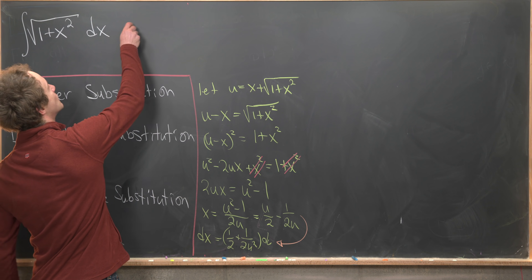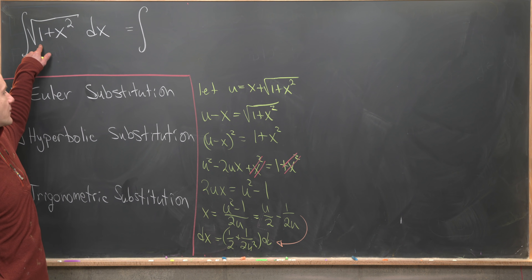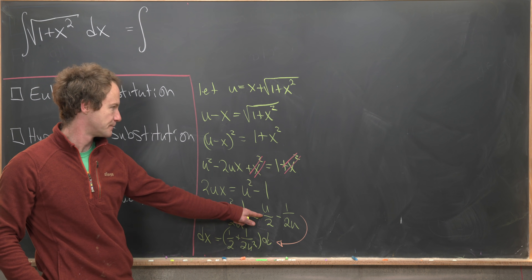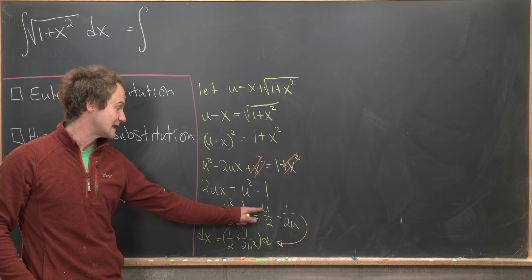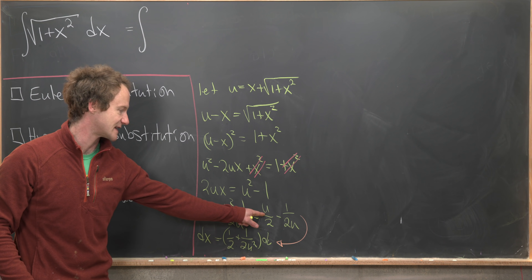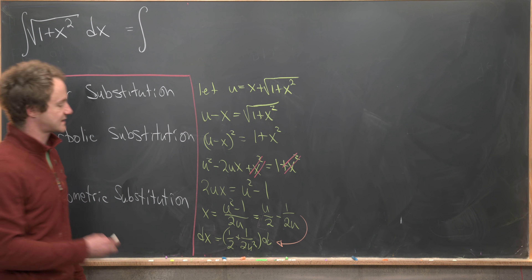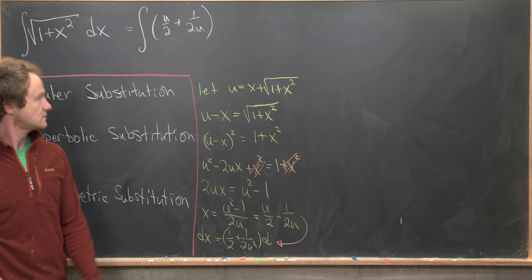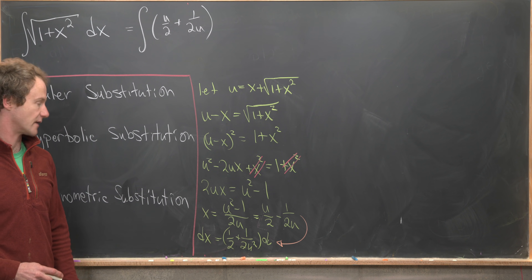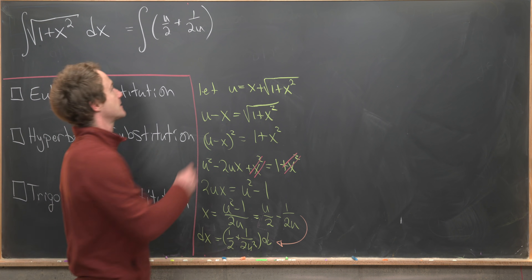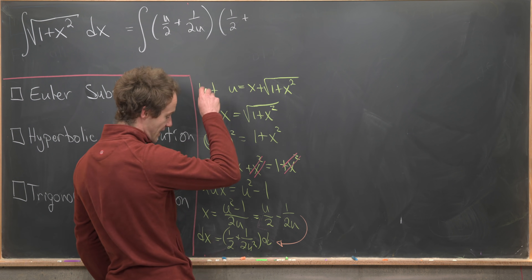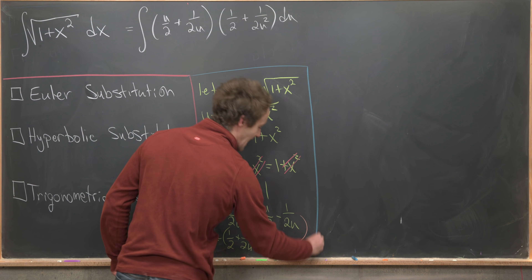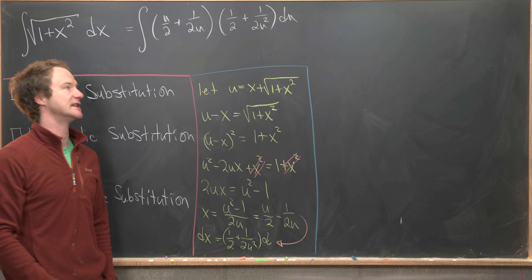Now we substitute into the integral. The square root of 1 plus x squared equals u minus x. Since we know x, u minus x gives u over 2 plus 1 over 2u — so that's our square root of 1 plus x squared. Multiplying by dx, which is one-half plus 1 over 2u squared du, we've now changed everything from an integral in x to an integral in u.